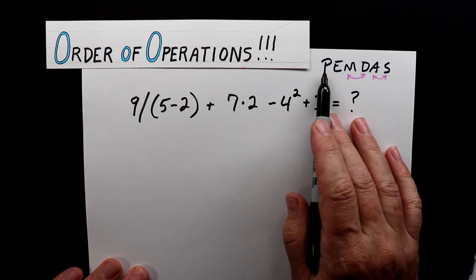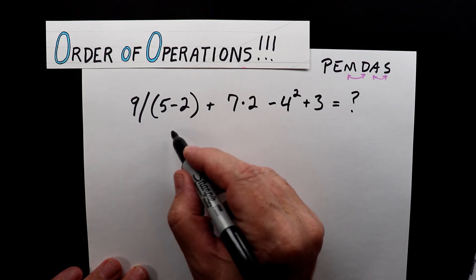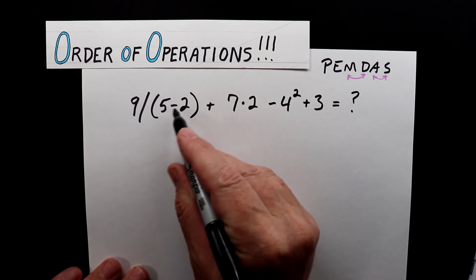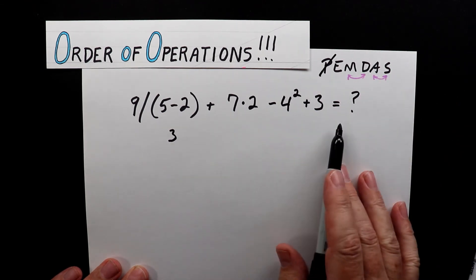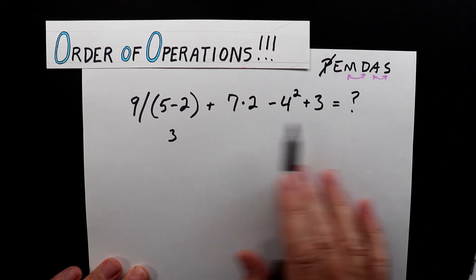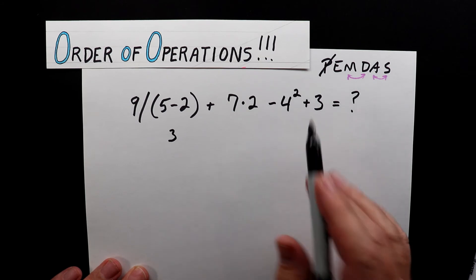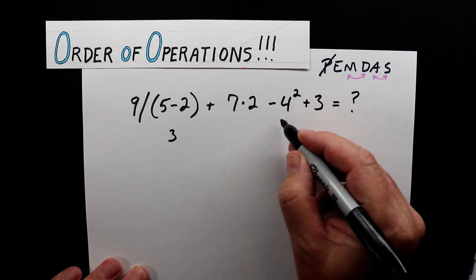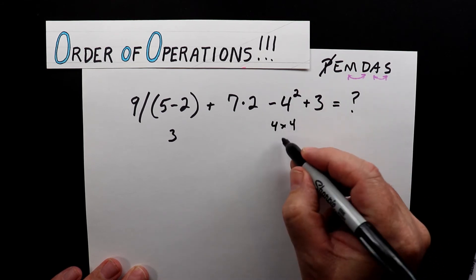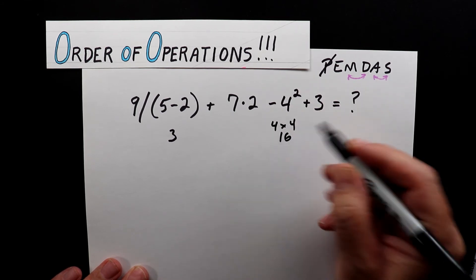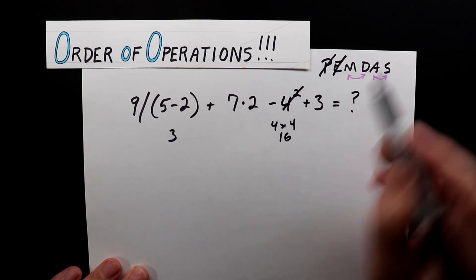The first thing is to look for parentheses. I see five minus two right at the front, so five minus two is three. I'll cross off the P since there are no other parentheses. Next I look for exponents, and I see four squared — four to the second power. Four times four is 16. There are no other exponents, so I cross the E off too.